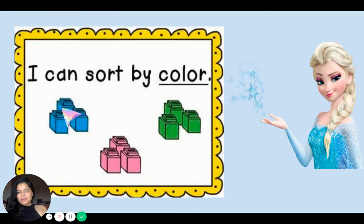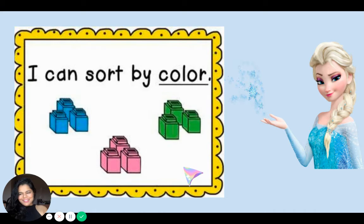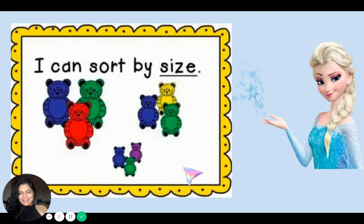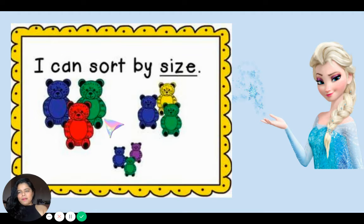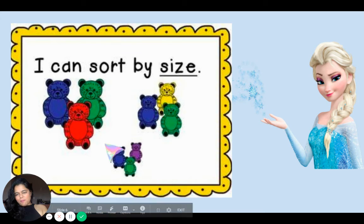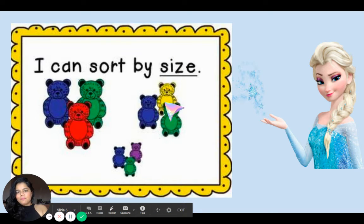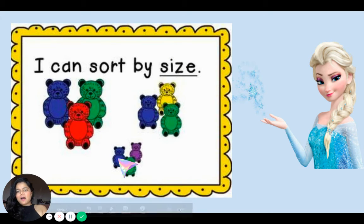I can sort by color. I can make three groups based on three different colors like blue, pink, and green. I can sort by size. These are big bears, medium bears, and teeny bopper bears. So I can sort them into three groups of big, medium, and small.